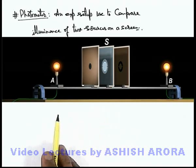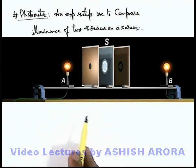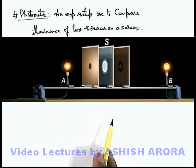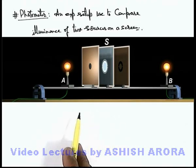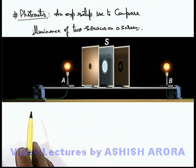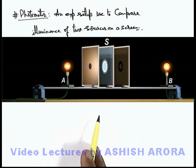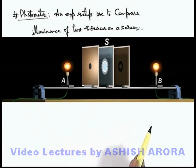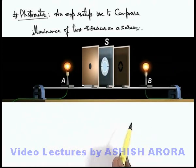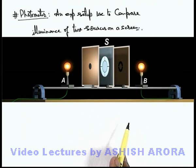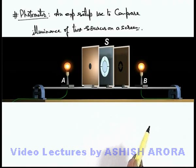If source A is brought closer, you can see the circular patch becomes more bright — that is, the illuminance of source A on screen increases. And if source B is brought closer by reducing its distance from the screen, the illuminance of the ring-shaped patch becomes more because of the lesser distance.